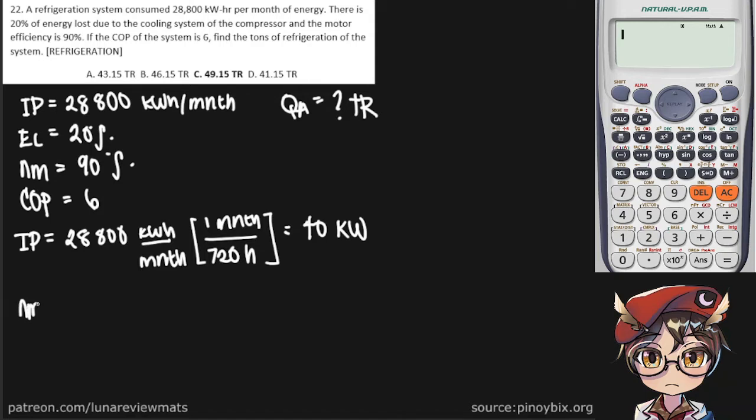We know that the motor efficiency is equal to the brake power divided by indicated power. We already know N sub m, which is 90%, and we're trying to find our brake power. We just solved for our IP, which is 40 kilowatts. So our brake power is equal to 36 kilowatts.